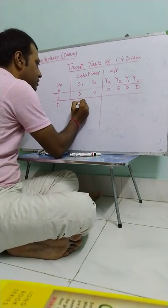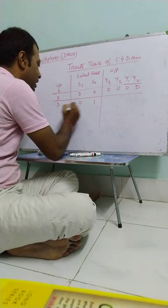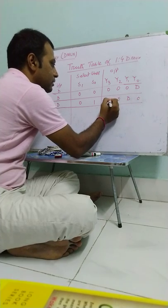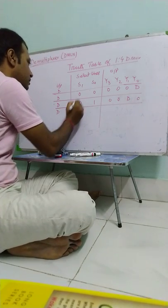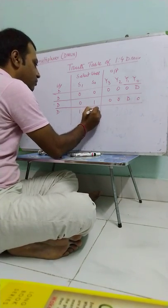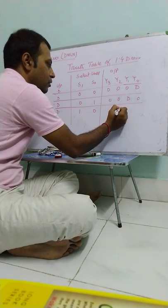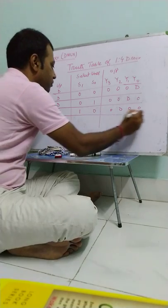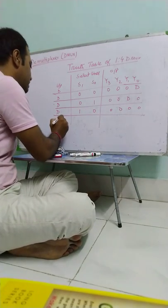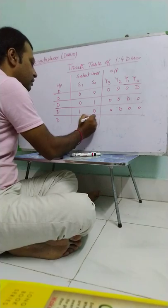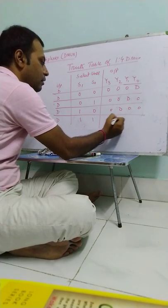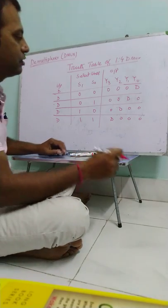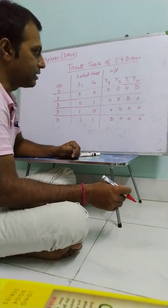When S1 is 0, S0 is 1, then Y1 is selected. For S1 is 1, S0 is 0, then Y2 is selected. When S1 is 1, S0 is 1, then Y3 is selected.